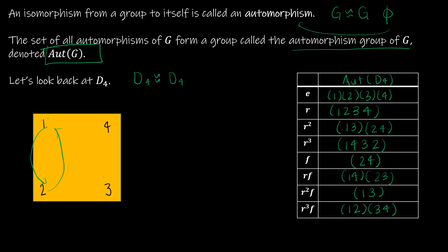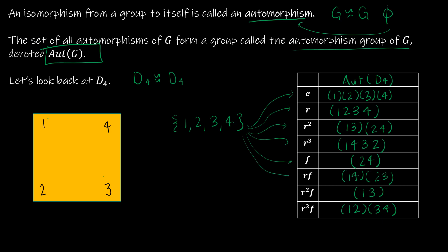To reiterate, each line of my table is an automorphism because the group containing elements 1, 2, 3, and 4 still has all the same elements — we're just mapping them to different positions. These are all automorphisms from a group to itself, and collecting all of them is called the automorphism group of G.